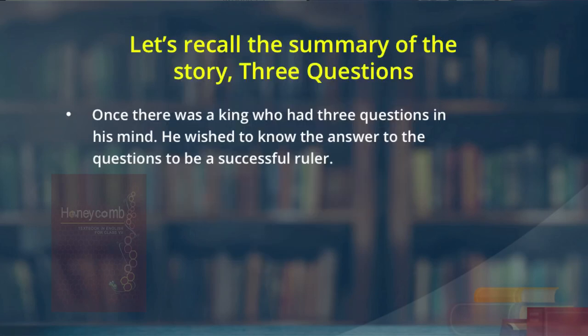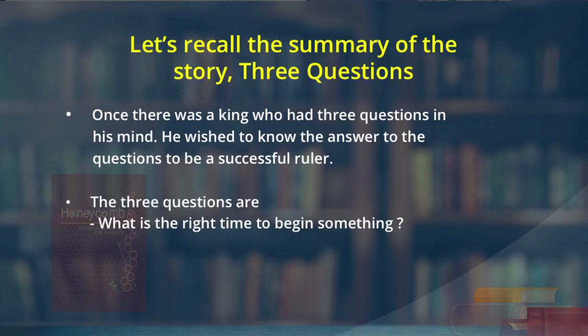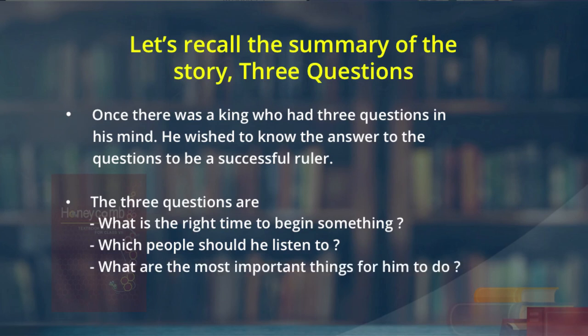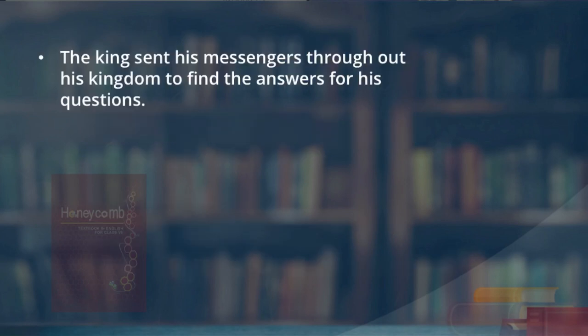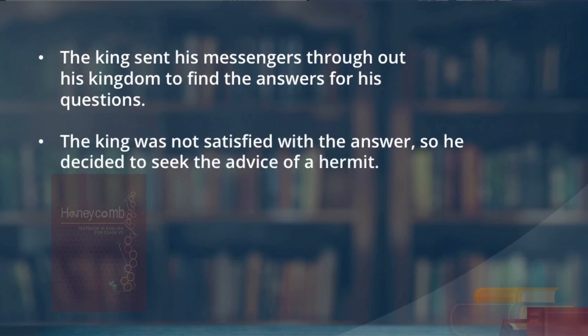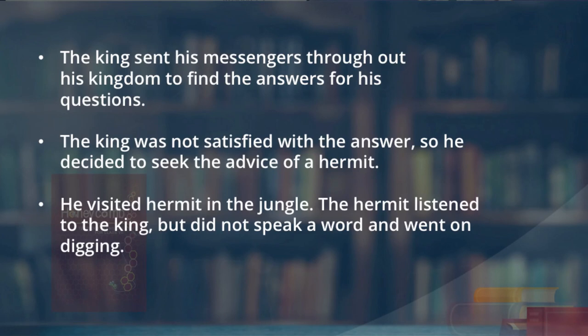Once there was a king who had three questions in his mind. He wished to know the answers to the questions to be a successful ruler. The three questions the king wanted to ask were: what is the right time to begin something? Which people should he listen to? What are the most important things for him to do in life? The king sent his messengers throughout his kingdom to find the answers, but he was not satisfied. So he decided to seek the advice of the hermit and visited him in the jungle.